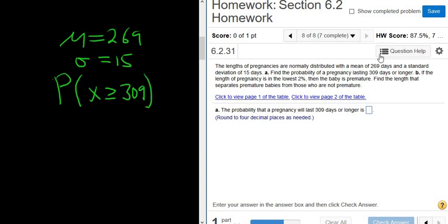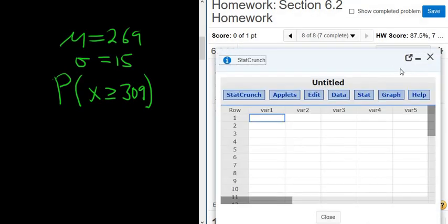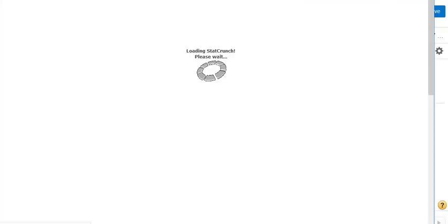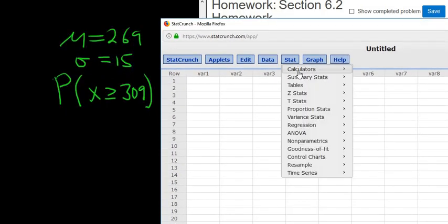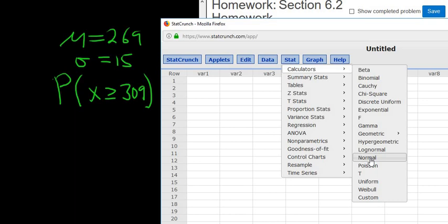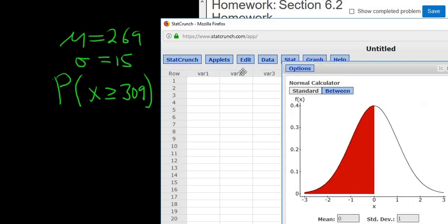Alright. So now we'll go to StatCrunch. Click on Question Help and StatCrunch, and we'll use the normal calculator. So we go to Stat, Calculators, Normal.